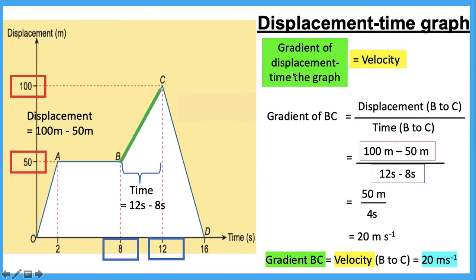Now you know the gradient of the displacement against times graph is equal to the value of velocity. So, to calculate the gradient, you need to find the displacement and the time from the graph. Let's say the question asks you to calculate the velocity of an object from point B to point C. To solve this, you need to find the displacement from point B to point C. By subtracting 100 meters from 50 meters, you get a displacement of 50 meters for this interval.